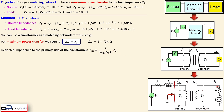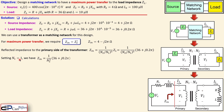The reflected impedance at the primary side is Z_in = (N1/N2)² × ZL, which is the general transformer reflection formula. Substituting ZL = 36 + j0.2π and setting N1 = 1 for simplicity, we get Z_in = (1/N2²) × (36 + j0.2π).